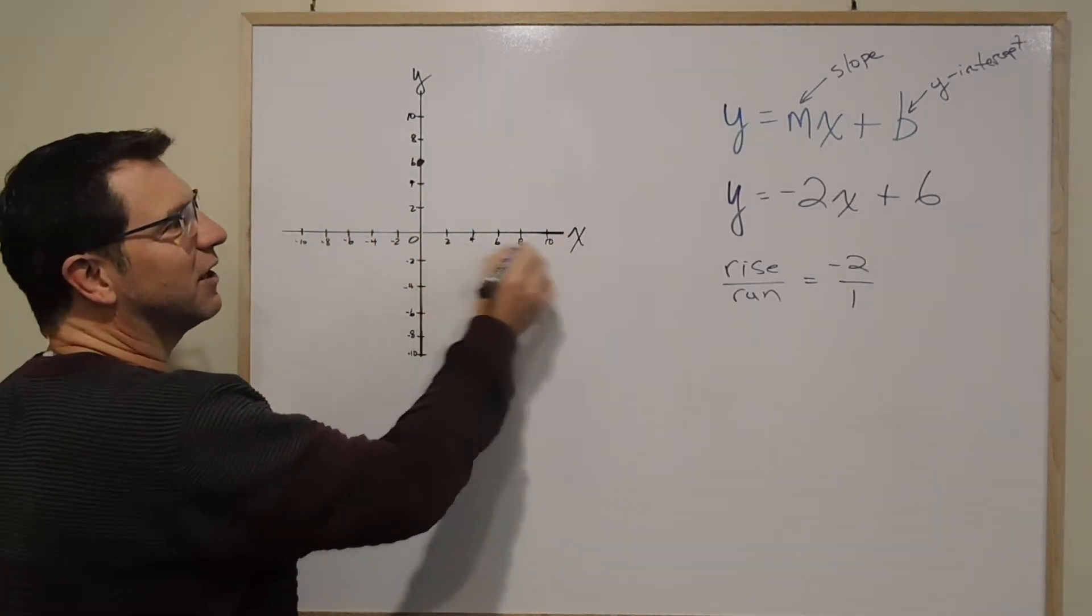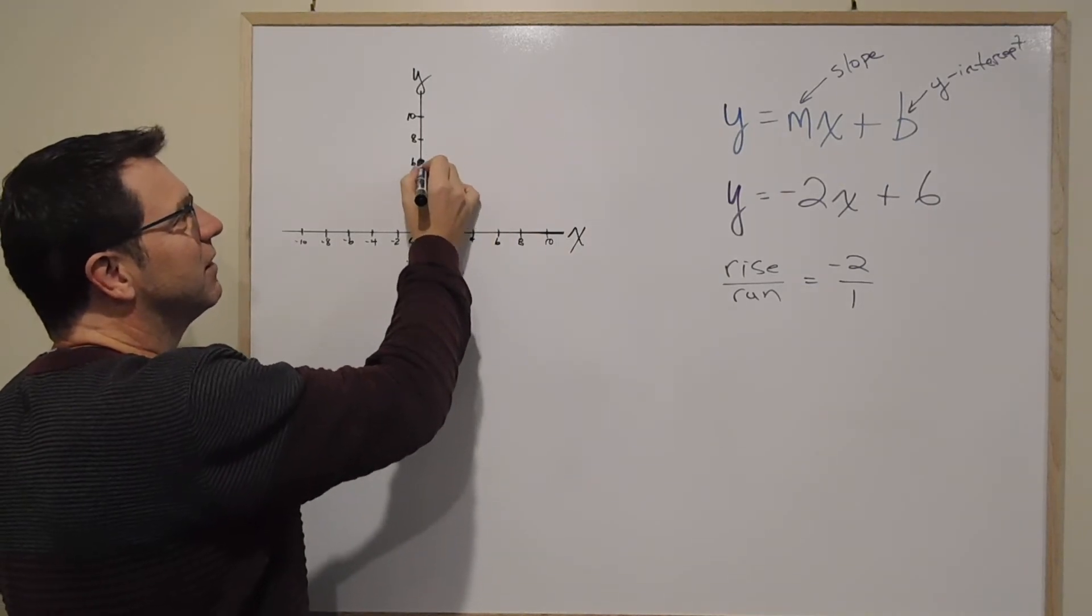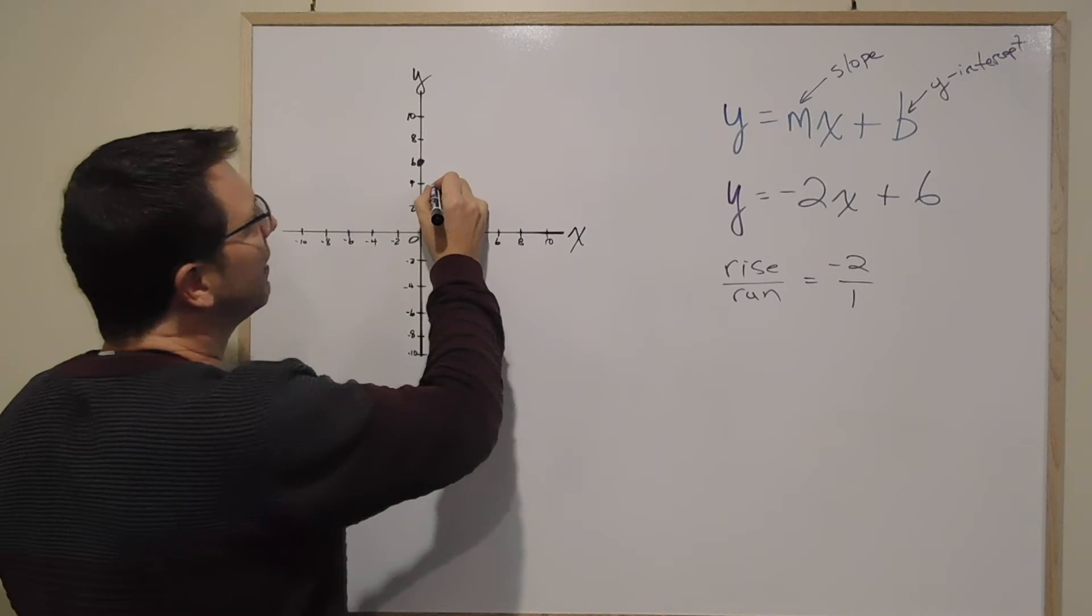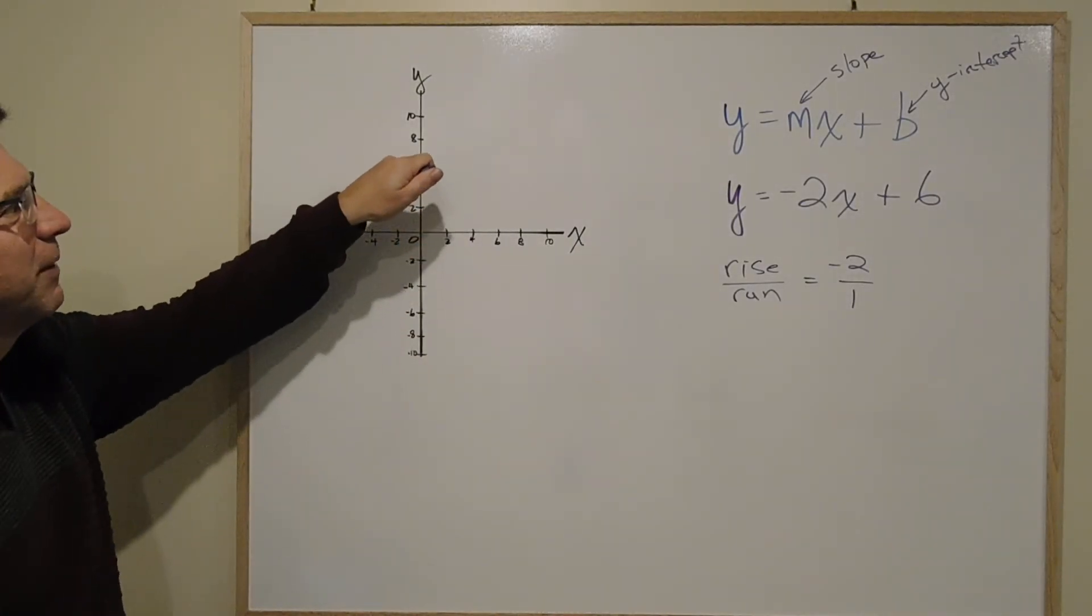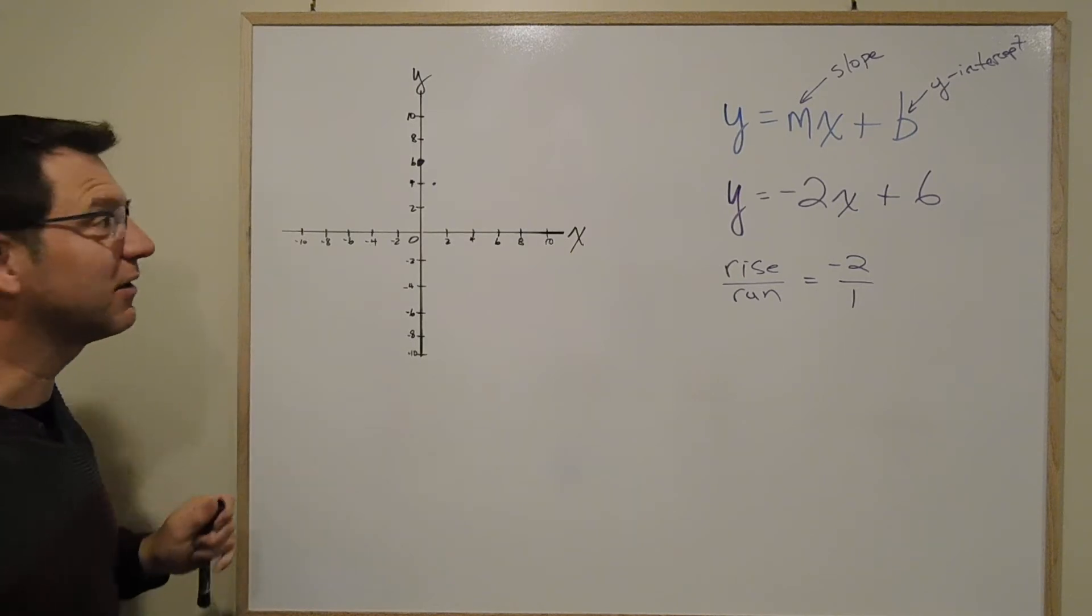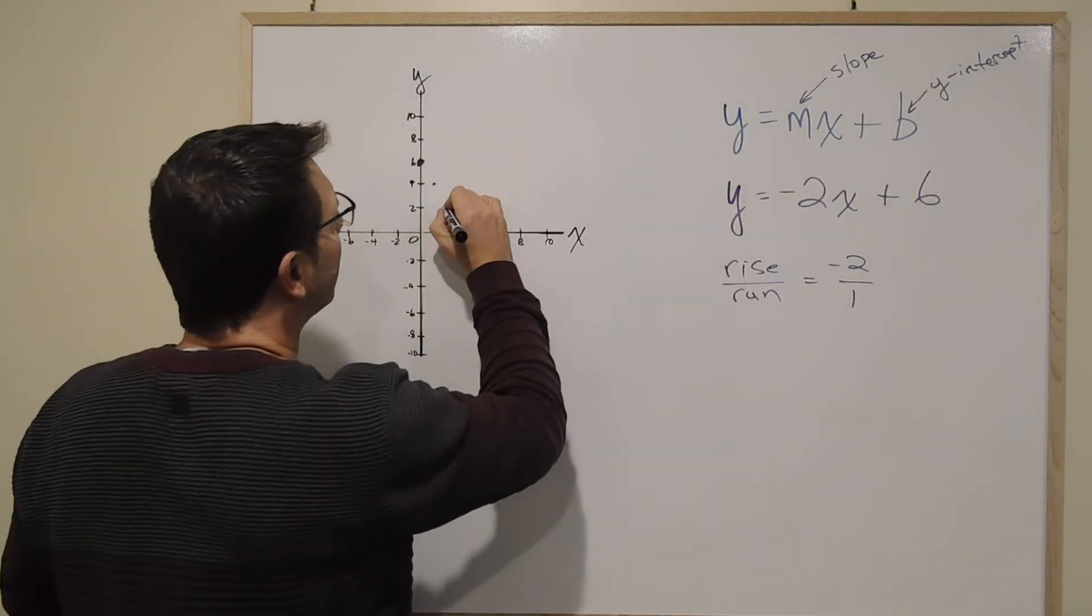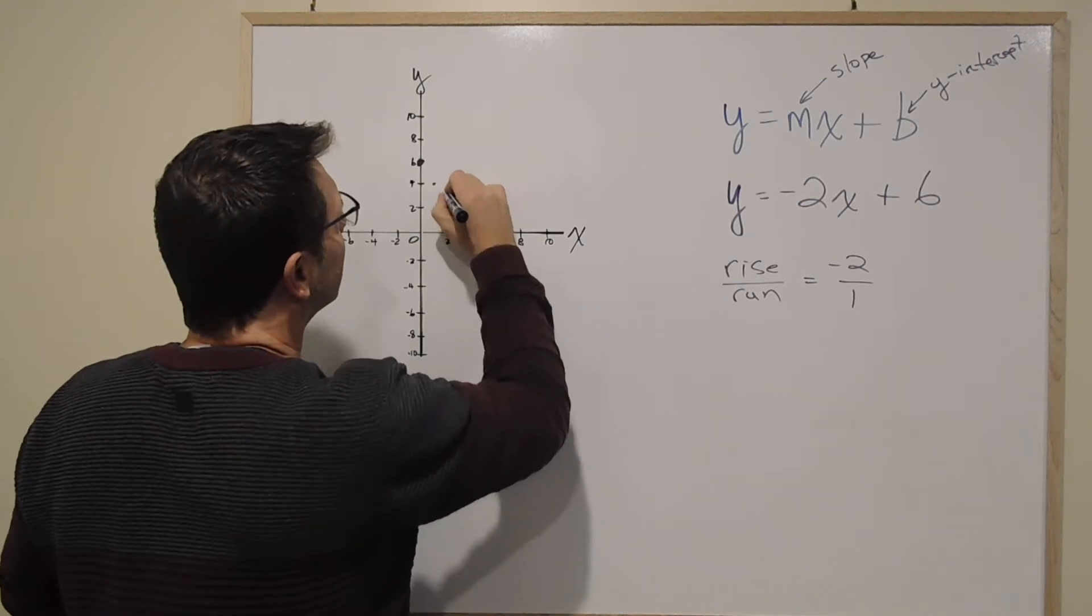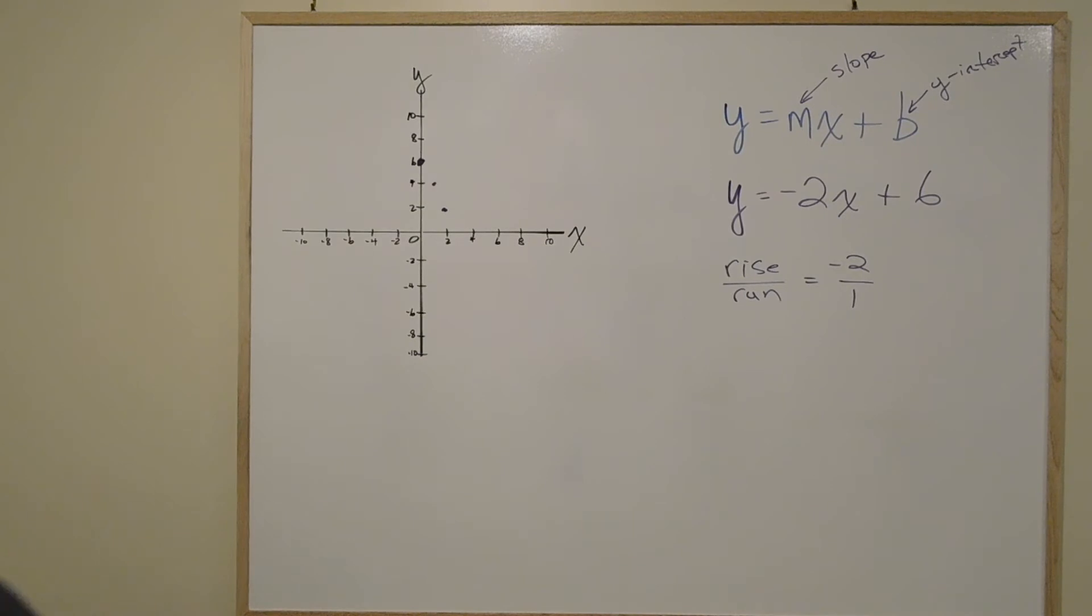So literally I'm going to start here at the 6. I'm going to go down 1, 2, and over 1. And I'm right here. See how my graph goes by 2? I'm going by 2. So you've got to be a little careful there. I'm going to go down 1, 2, and over 1. I'm going to be right here. And that is literally all I have to do.